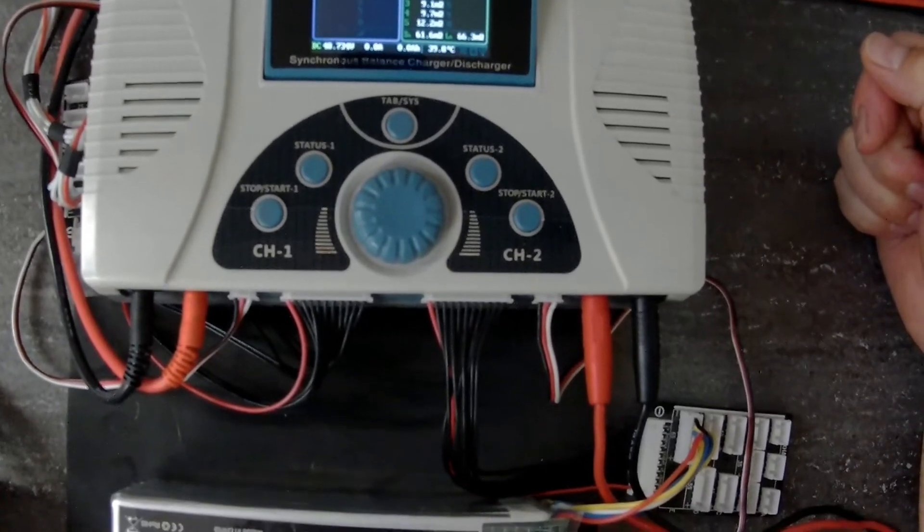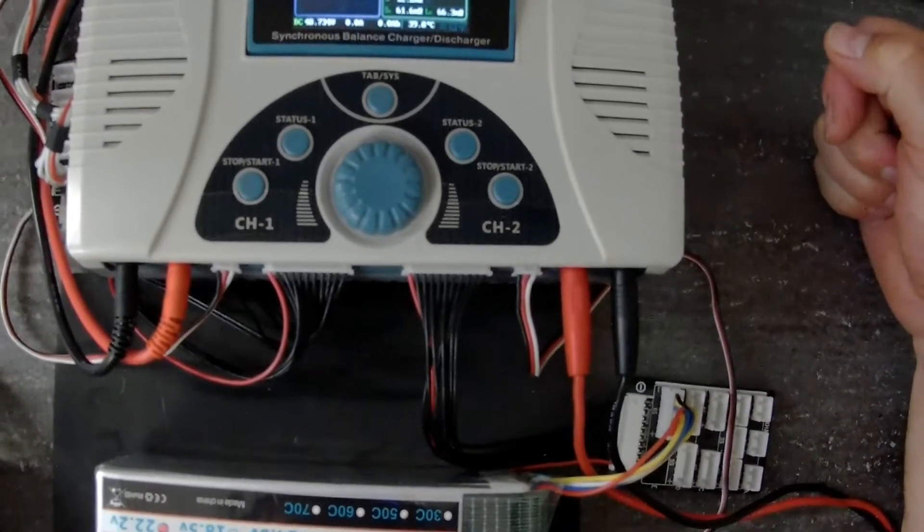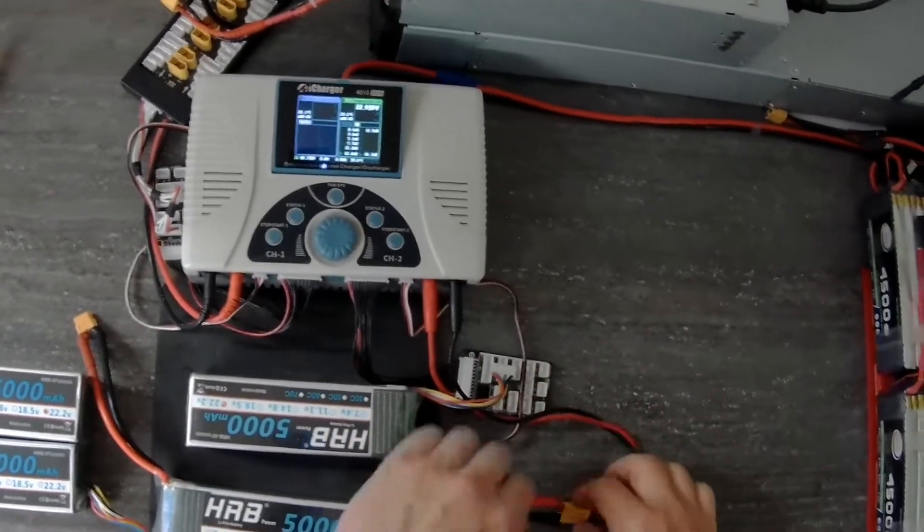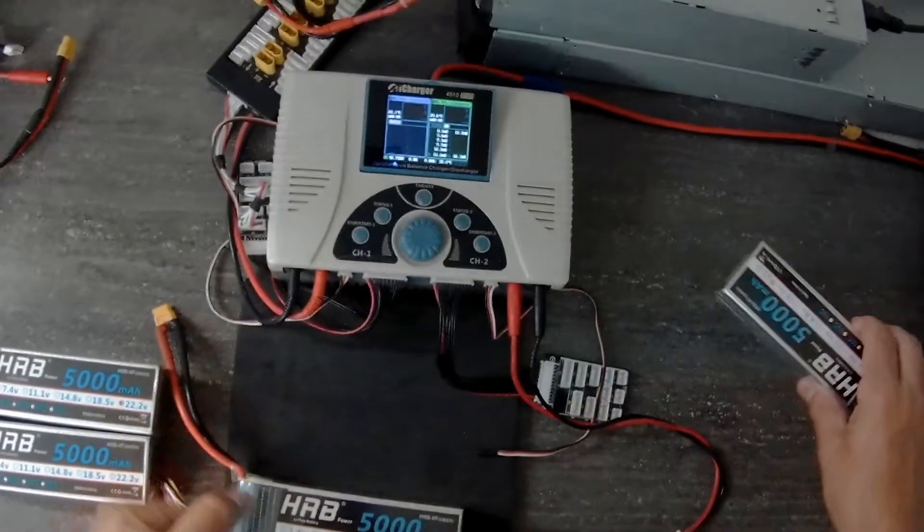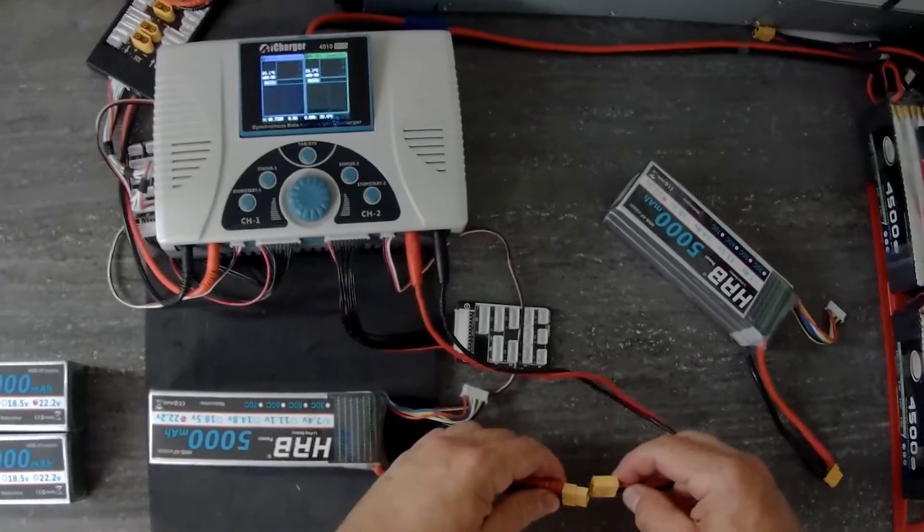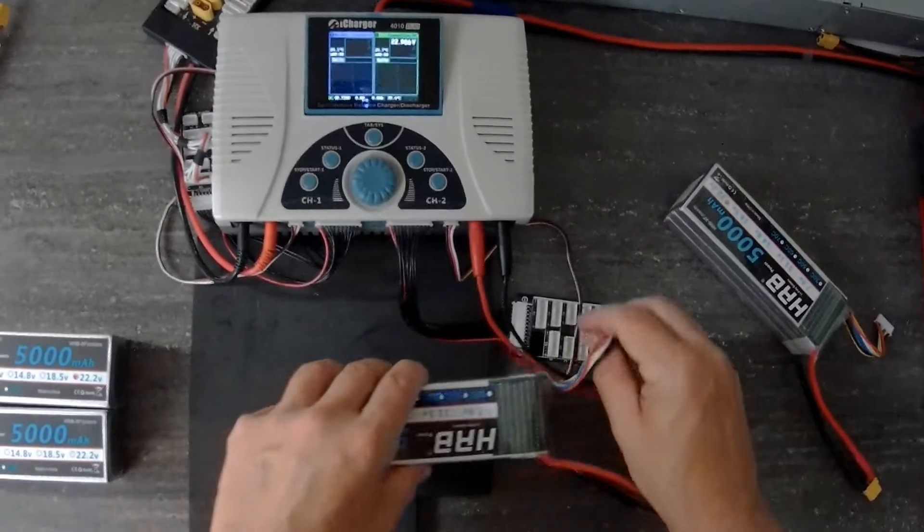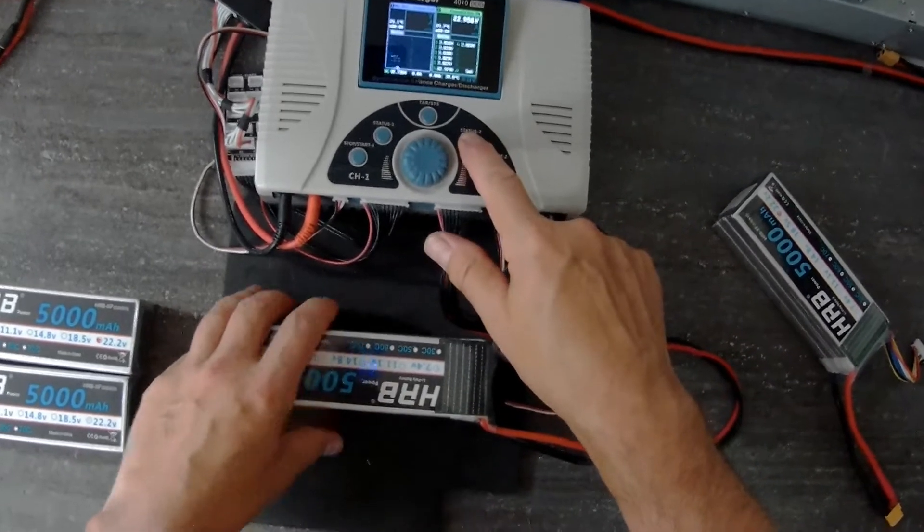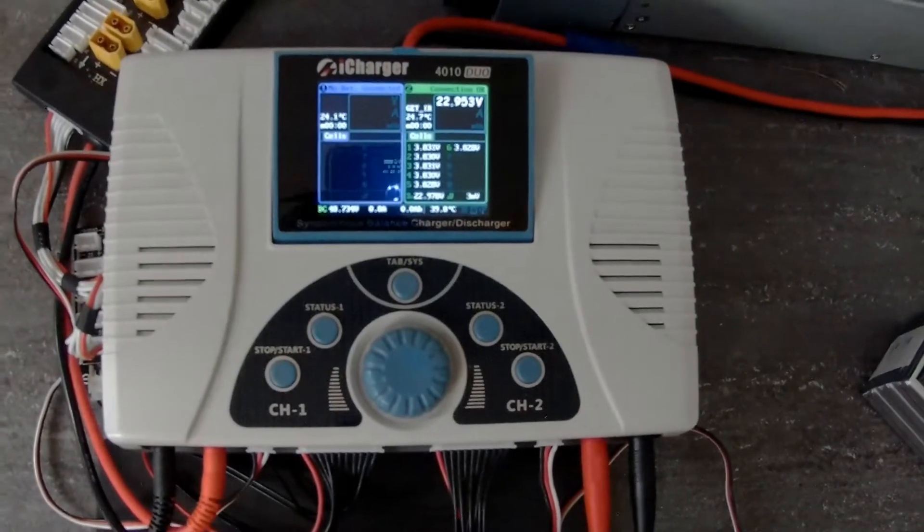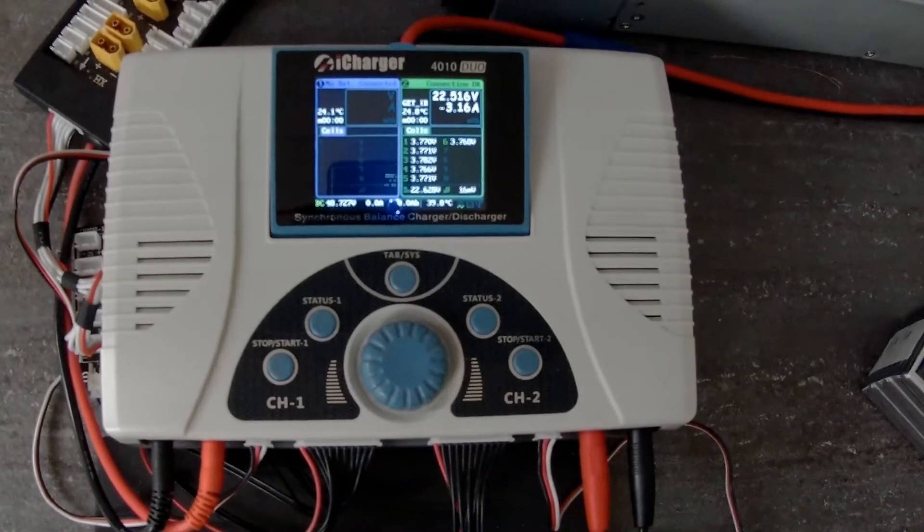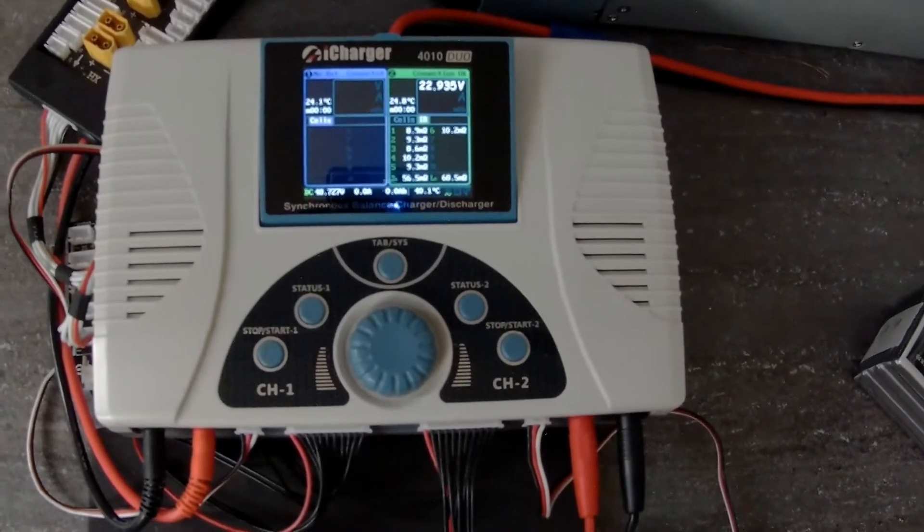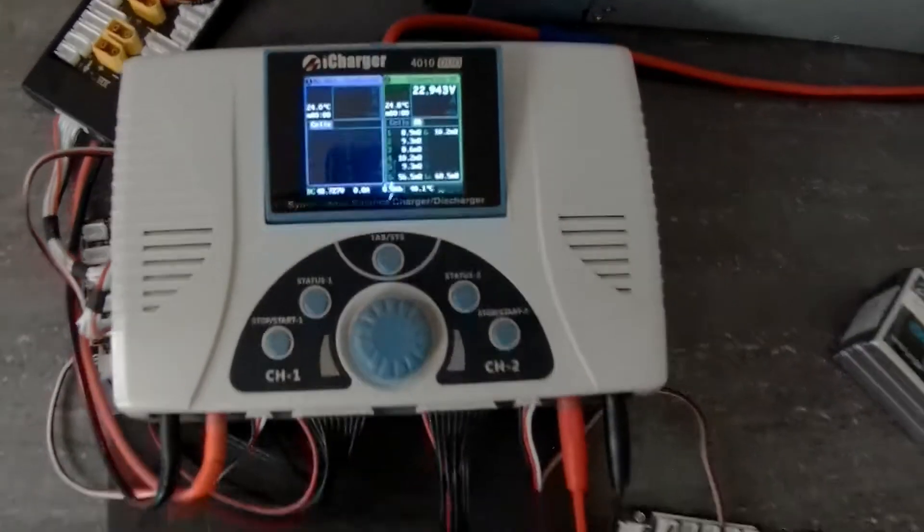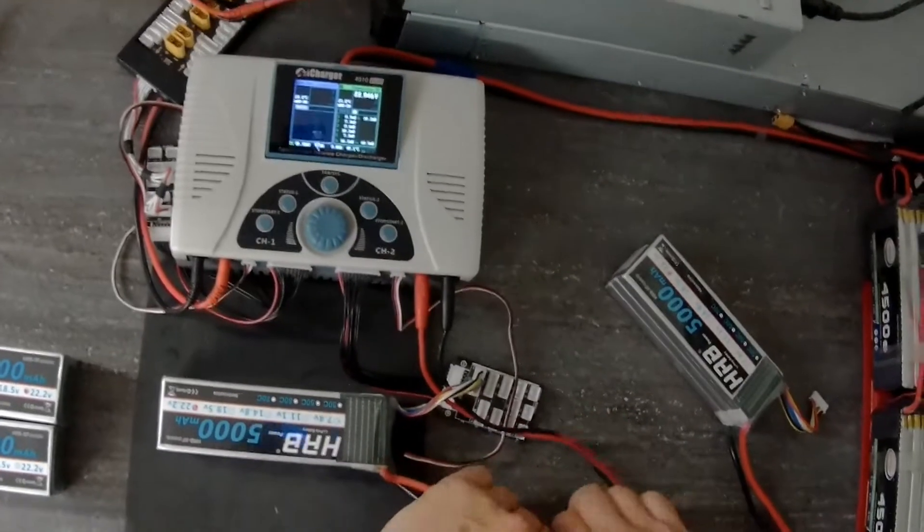Right, so highest 12.5, lowest 8.5. So that's not come down at all with the bench cycles. Check another one. Highest 10.2, lowest 8.6. So again, that's not come down at all.